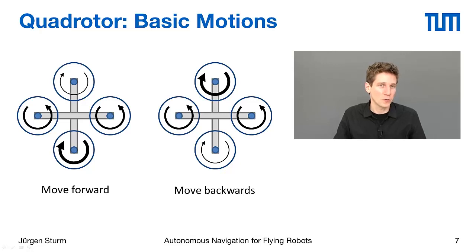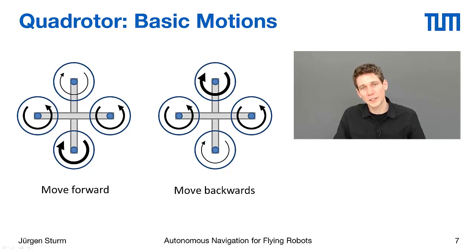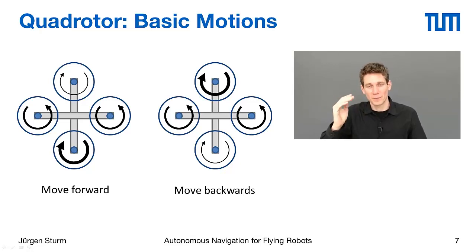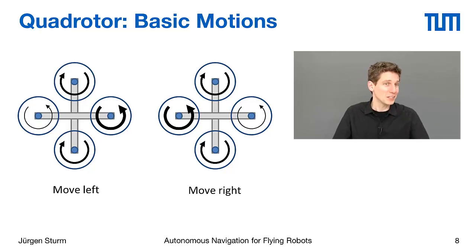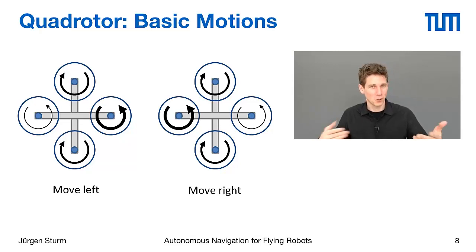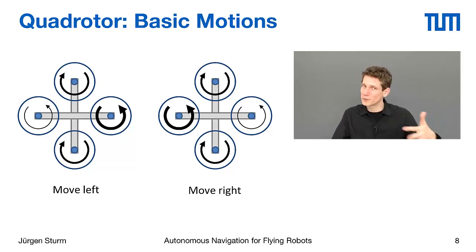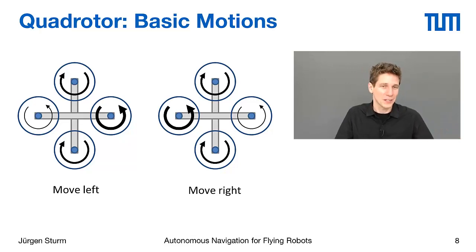Similarly, if you want to fly backwards, you would increase the speed of the front motor and reduce the speed of the back motor, which changes the attitude of your quadrotor backward and leads to a horizontal acceleration in that direction. You can also move to the left and to the right with the same principle, and of course you can combine all of these motions at the same time — for example, to move left while rotating left, or to ascend and rotate simultaneously.